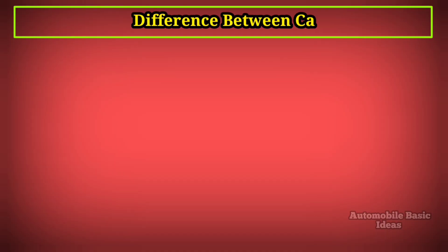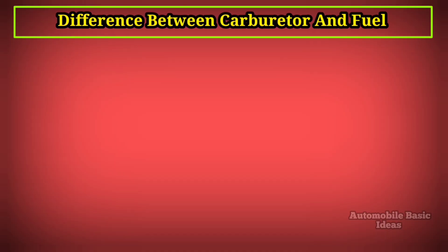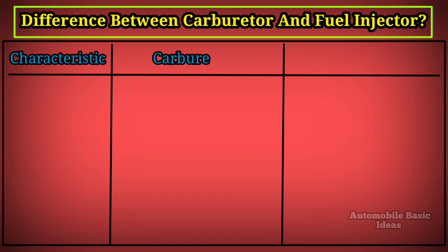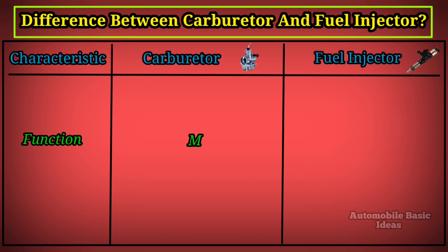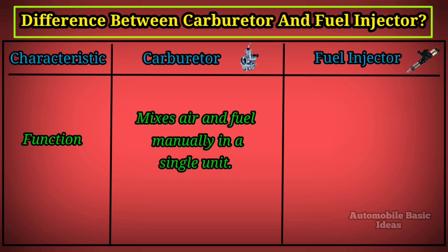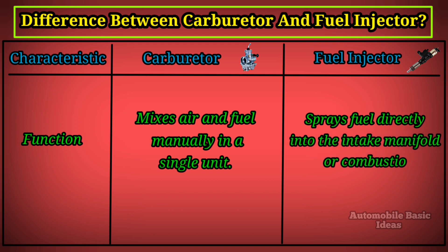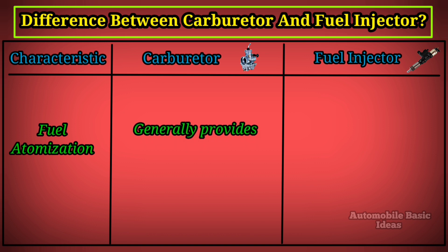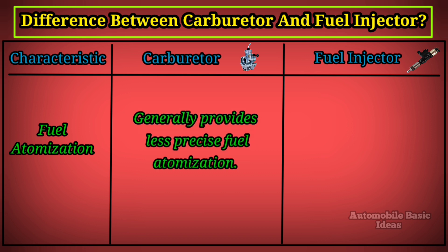Difference between carburetor and fuel injector. Characteristic — carburetor versus fuel injector. Function: a carburetor mixes air and fuel manually in a single unit, while a fuel injector sprays fuel directly into the intake manifold or combustion chamber. Fuel atomization: a carburetor generally provides less precise fuel atomization, whereas a fuel injector offers more precise and efficient fuel atomization.